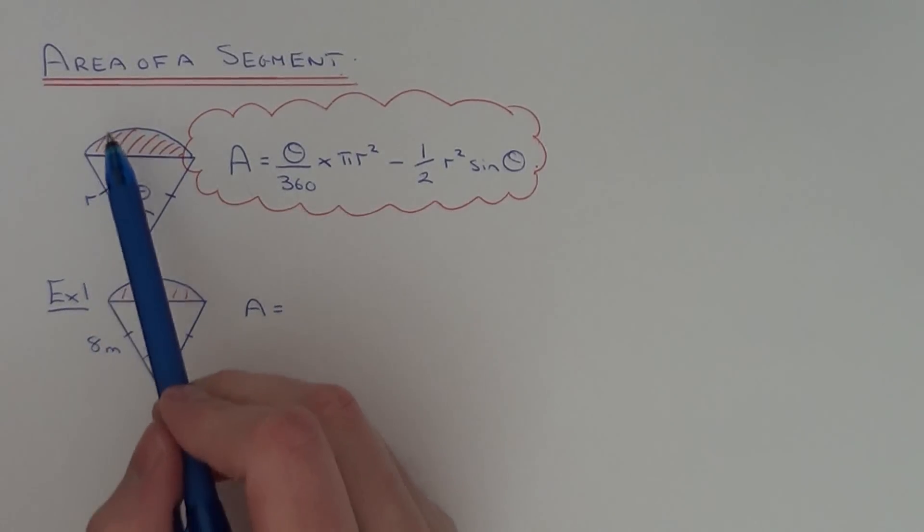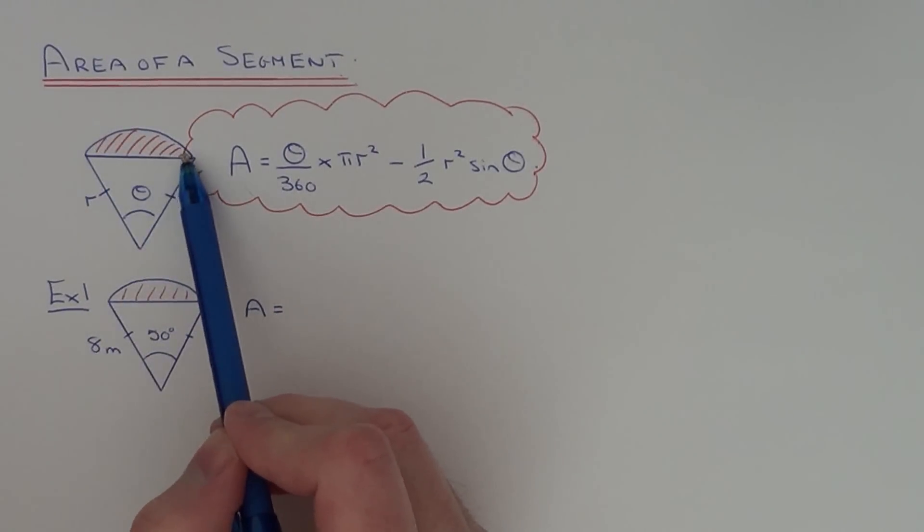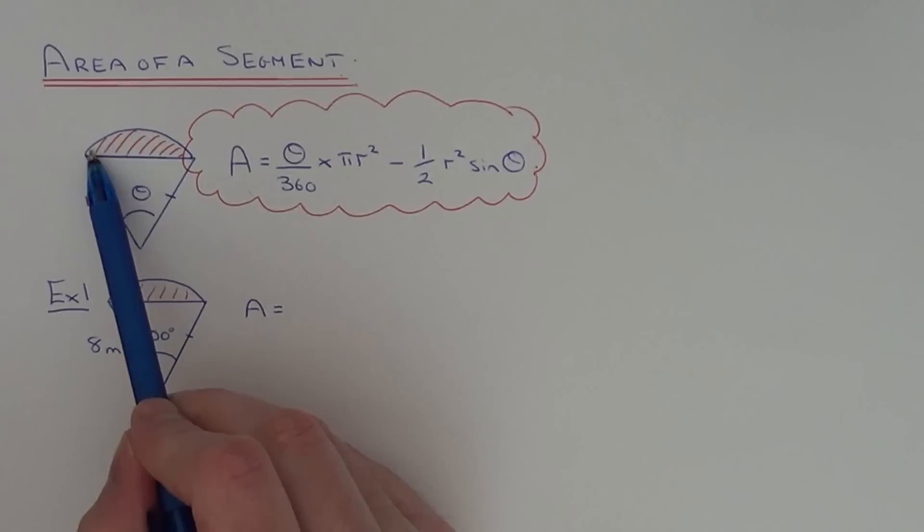Today I'm going to show you how to work out the area of a segment. So that's the space enclosed between the arc length and the chord.